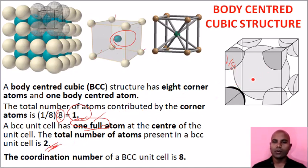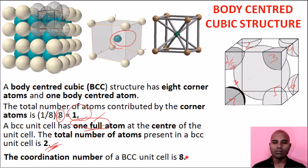For coordination number in BCC: if we take the center atom and count how many atoms are around it — 1, 2, 3, 4, 5, 6, 7, 8 — there are 8 atoms surrounding the body center atom. So the coordination number is 8. The number of atoms surrounded by a single atom is 8.